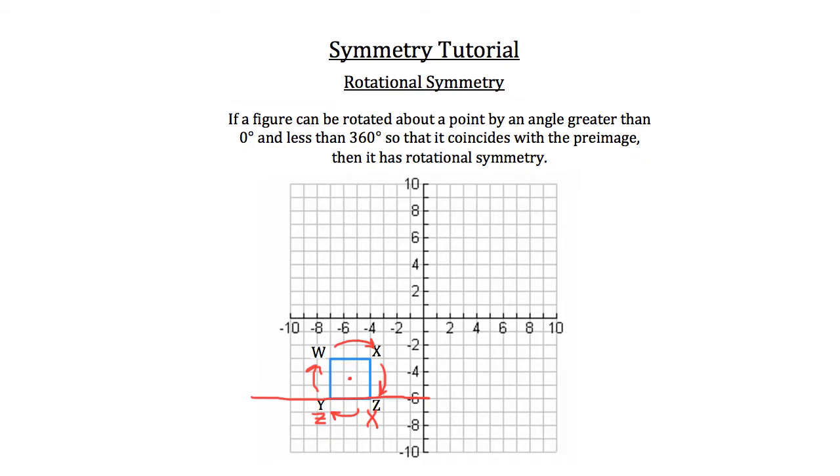Let me show you an example of a figure that doesn't have rotational symmetry. Let's take a look at the triangle, triangle ABC. Imagine that we were looking at the center of the triangle, and I'll draw it right about there. And imagine that that triangle were sitting on a table top right here.